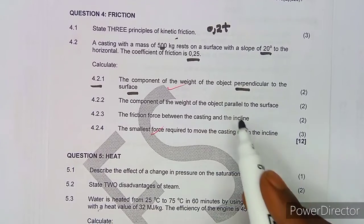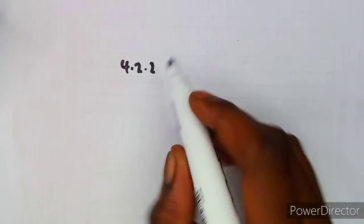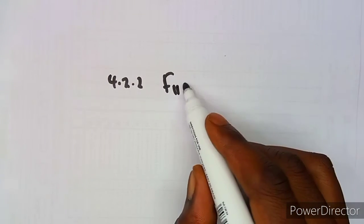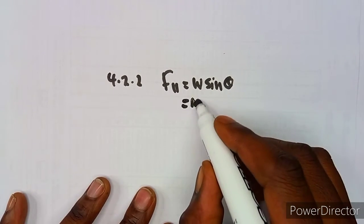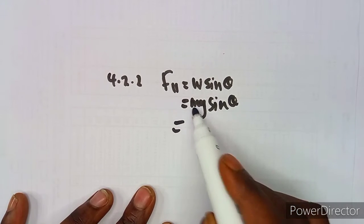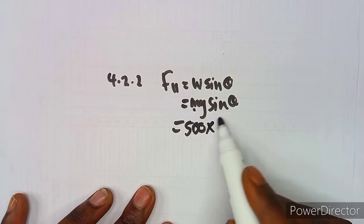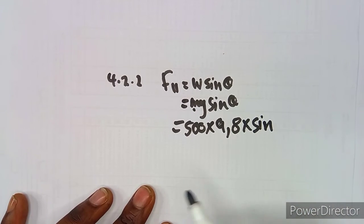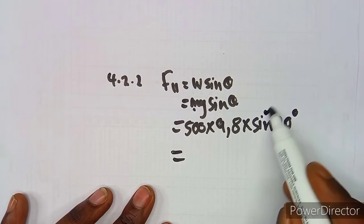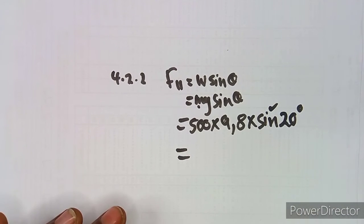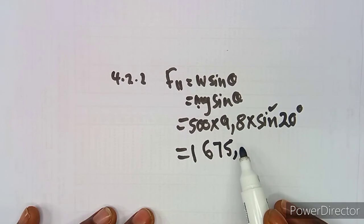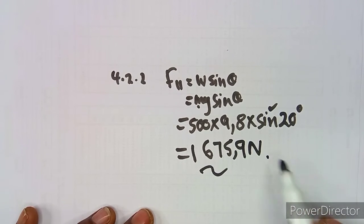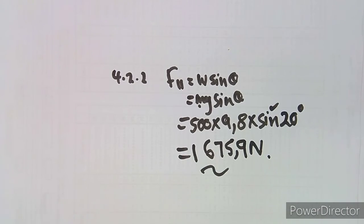On question 4.22, we need the parallel component, F_parallel, which equals W·sin θ. Since W = mg, it becomes mg·sin θ. Substituting the same values: 500 × 9.8 × sin(20°). Only the sine function changes but everything else remains the same. Using the calculator, we obtain 1675.9 newtons. Make sure you use your calculator properly and round off these values correctly.